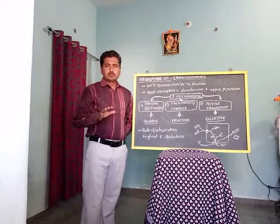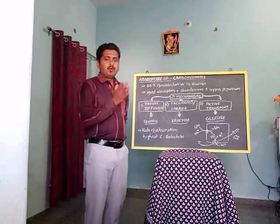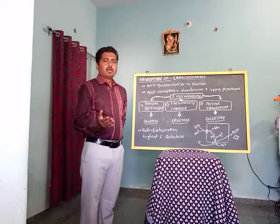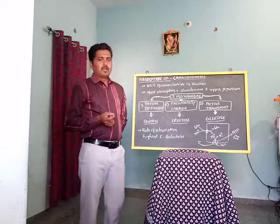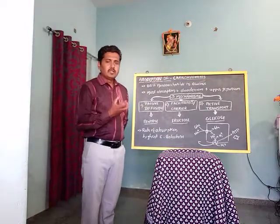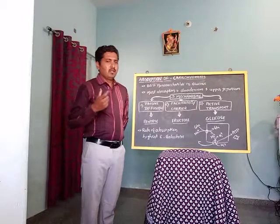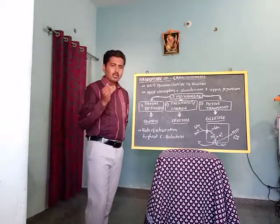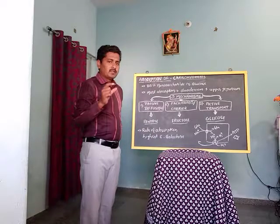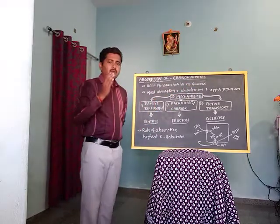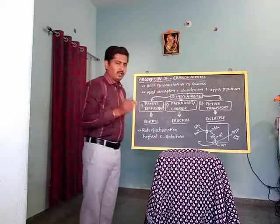In digestion, by the action of carbolytic enzymes, complex forms of carbohydrate are converted into simple monosaccharide units. Among those, glucose and galactose are produced. After digestion of complex starch, 80% of the monosaccharide end product is glucose.